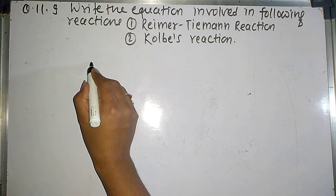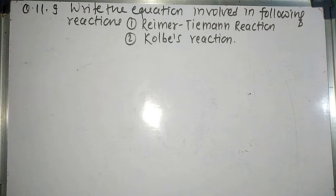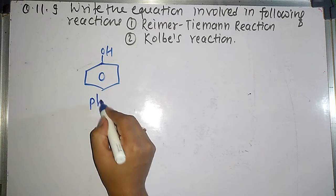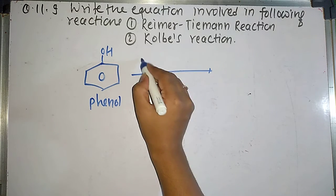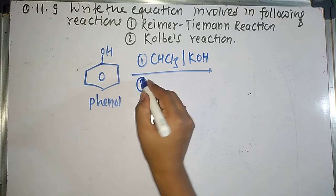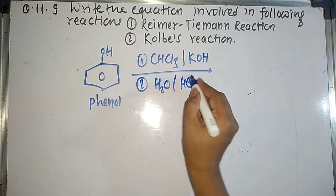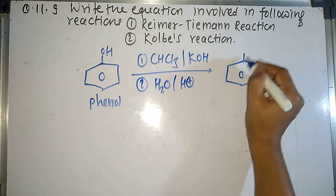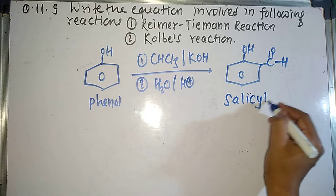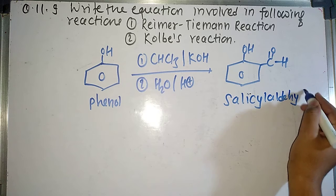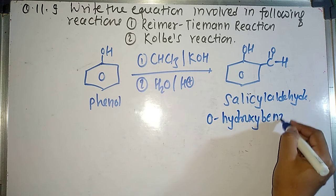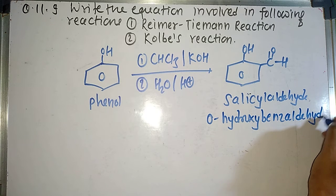Write the reaction or equation for Reimer-Tiemann reaction and Kolbe's reaction. So what is Reimer-Tiemann reaction? In Reimer-Tiemann reaction, phenol changes into salicylaldehyde. So what is phenol? This is the phenol when it reacts with first chloroform, that is CHCl3, in presence of aqueous or alcoholic KOH, followed by reaction with water in acidic medium, gives us formation of salicylaldehyde or which is also called as ortho-hydroxybenzaldehyde. This reaction is called as Reimer-Tiemann reaction.